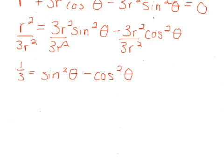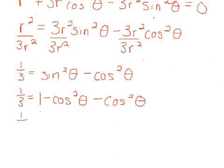And what we want to try to do is get this to be all the same trig function. So we can turn sine squared theta to 1 minus cosine squared theta. And we still have this minus cosine squared theta. So we have 1 third equals 1 minus 2 cosine squared theta. We're almost done.